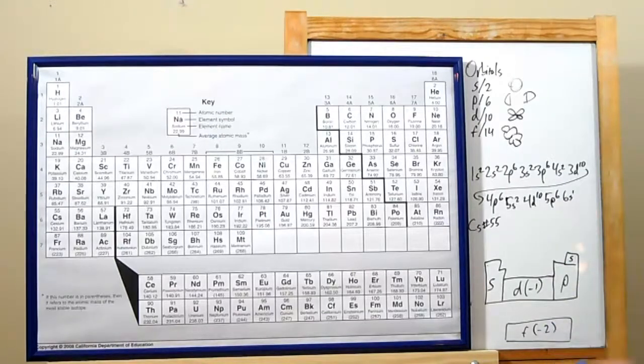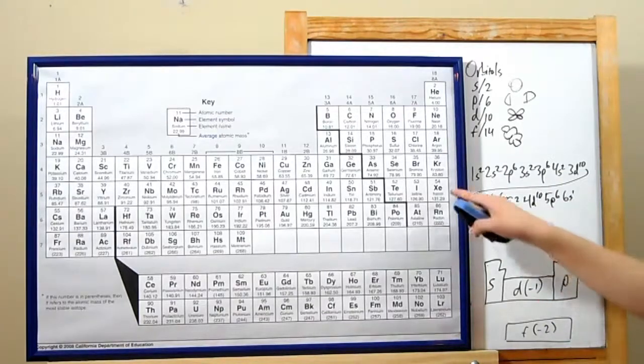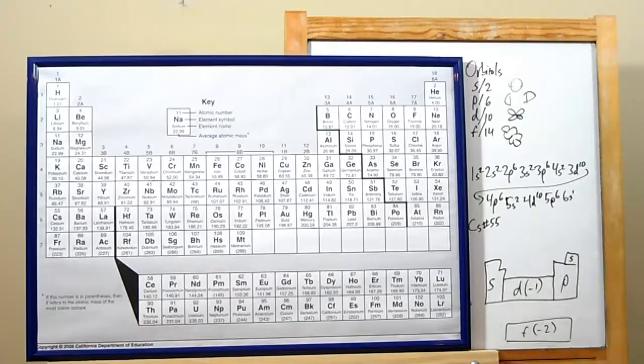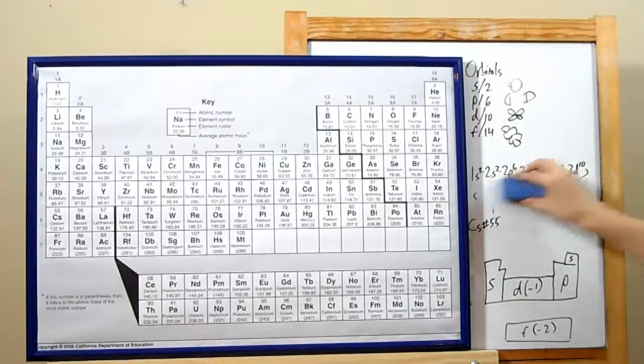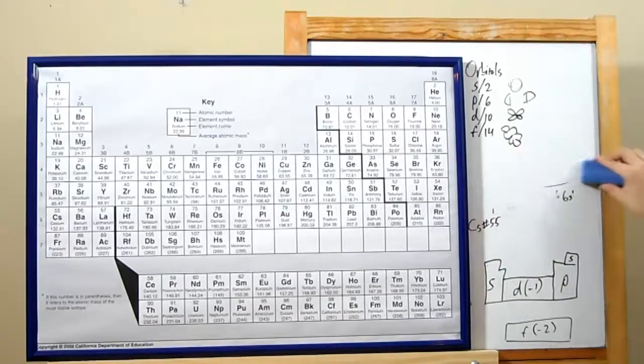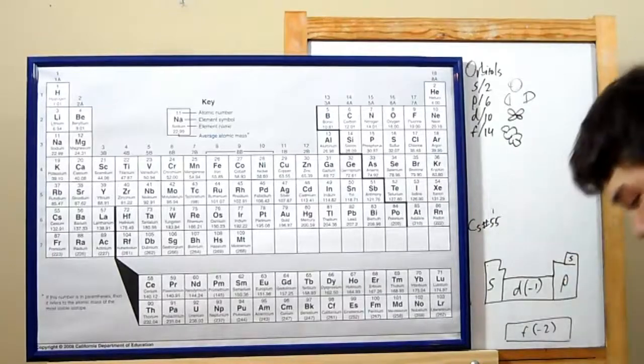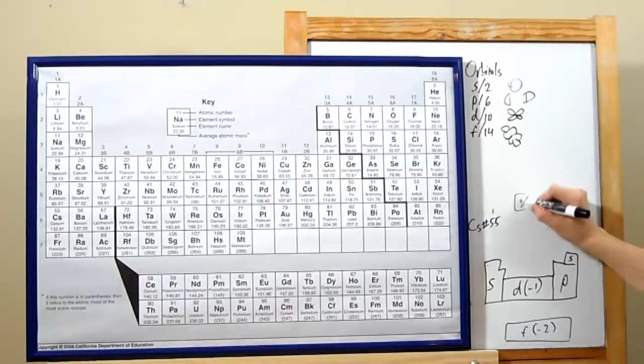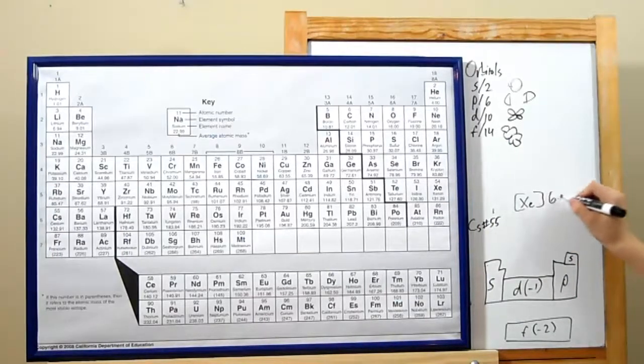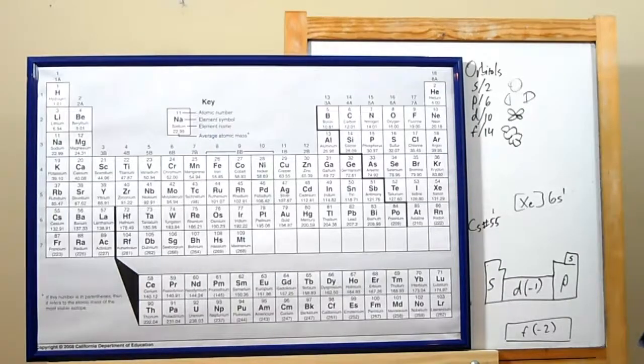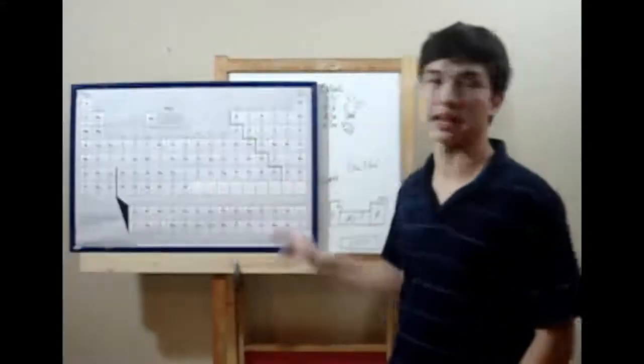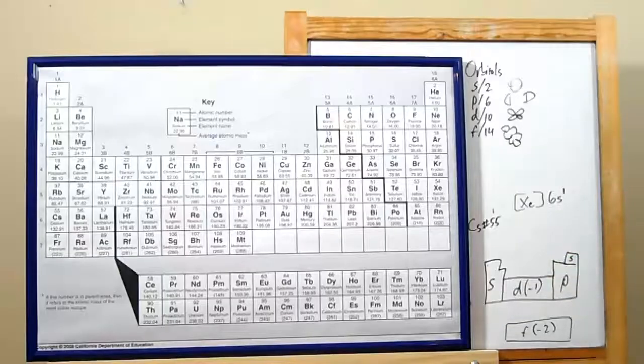So we know that cesium has xenon's electron configuration and then 6s1. We can just erase all of xenon's electron configuration and instead write in square brackets its chemical symbol, Xe, and whatever is left over. Remember, just look back and see the noble gas that happened before, then add in anything you need else.